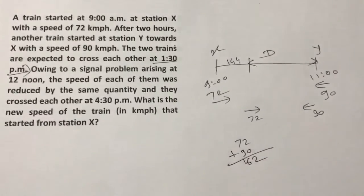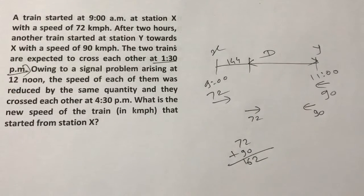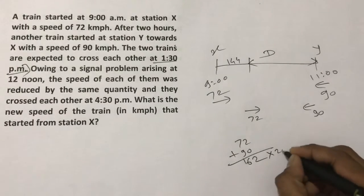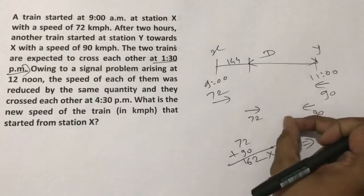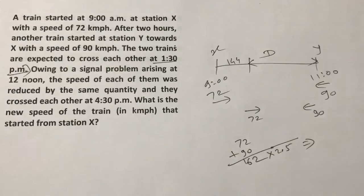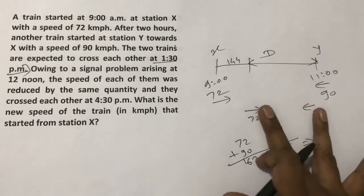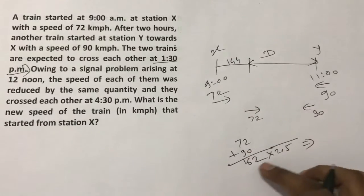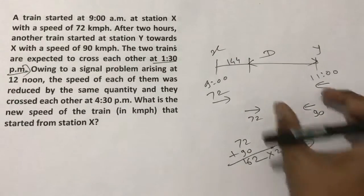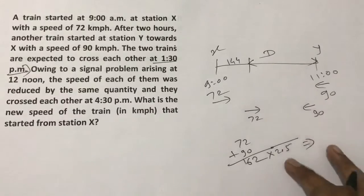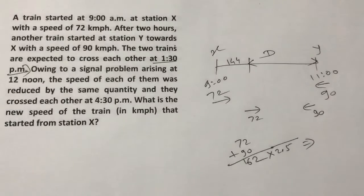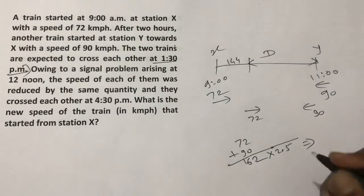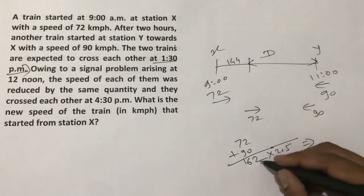From 11 to 1:30, which is 2.5 hours, in that time they expect to meet at 1:30. So the distance between them at 11 am would be 162 into 2.5, because at a relative speed of 162, in 2.5 hours the distance between them can be covered. That means they can meet. Distance between them is 162 into 2.5.